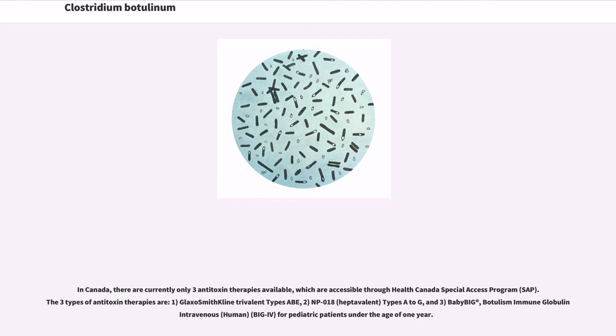In Canada, there are currently only three antitoxin therapies available, which are accessible through Health Canada's special access program. The three types of antitoxin therapies are: 1) GlaxoSmithKline Trivalent Type ABE, 2) NP-018 Type A to G, and 3) BabyBIG, Botulism Immune Globulin Intravenous for pediatric patients under the age of one year.